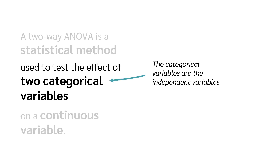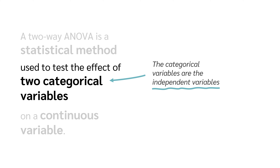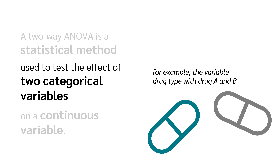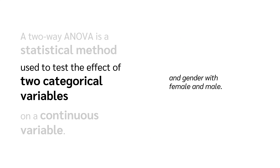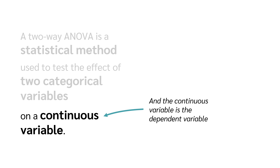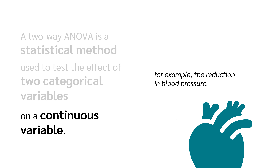The categorical variables are the independent variables — for example, the variable drug type with drug A and B, and gender with female and male. The continuous variable is the dependent variable, for example, the reduction in blood pressure.